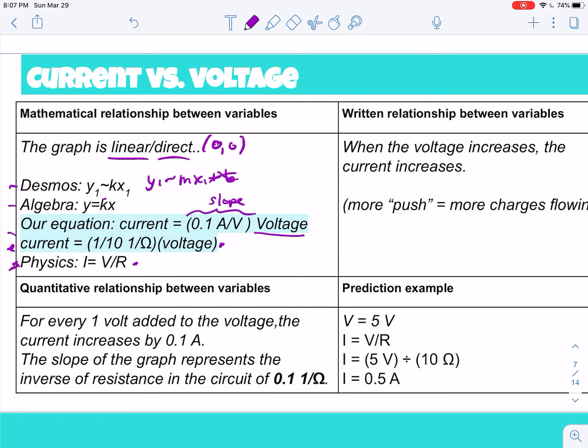So this is kind of your equation. So your relationship between the variables when the voltage increases, the current increases, all right? And what you wanna talk about in your CER basically is when there's more push, right? That's the voltage. When there's more push, more charges are flowing. So that means an increased voltage would mean an increased current, right? Which makes sense, right? If the battery's pumping and pushing harder, more charges are gonna be able to move around, which would increase the current, okay?